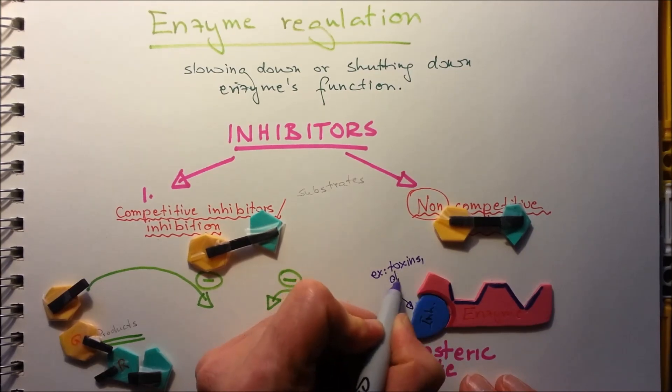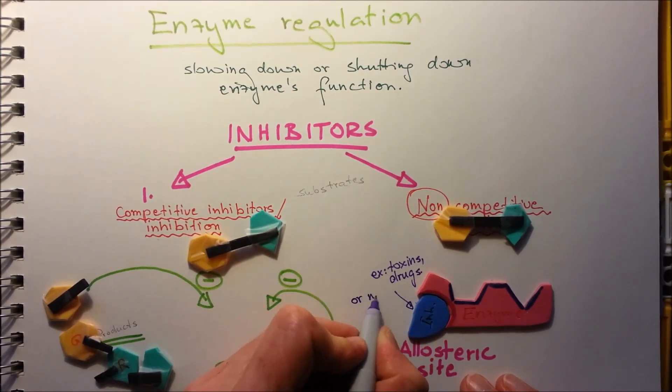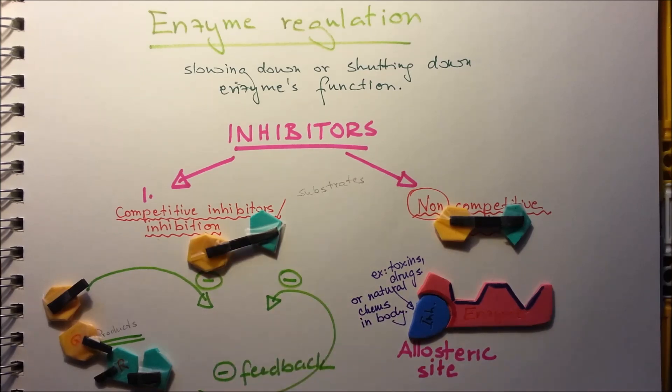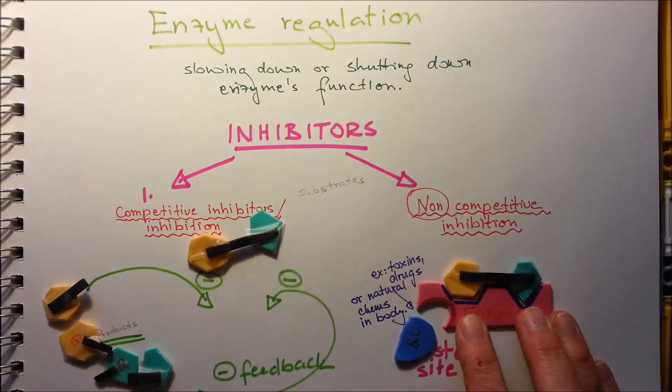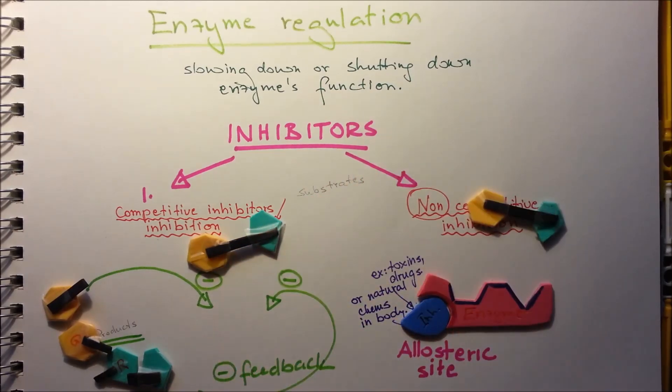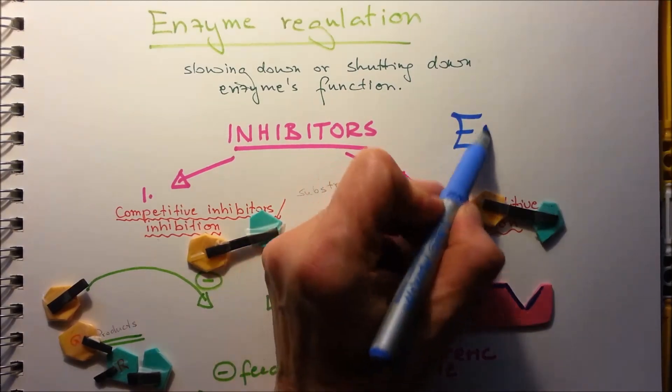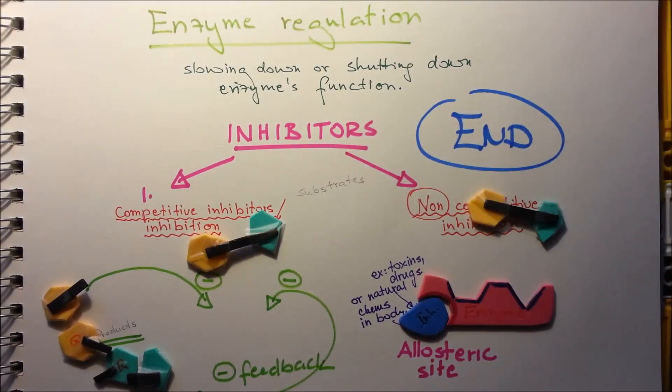Examples for those molecules are toxins, drugs, or natural chemicals in the body too. So when there's no allosteric protein there, the enzyme is going to work.